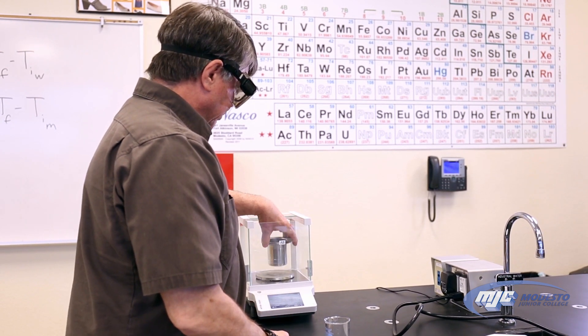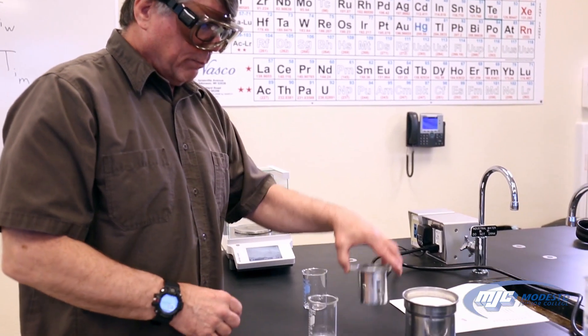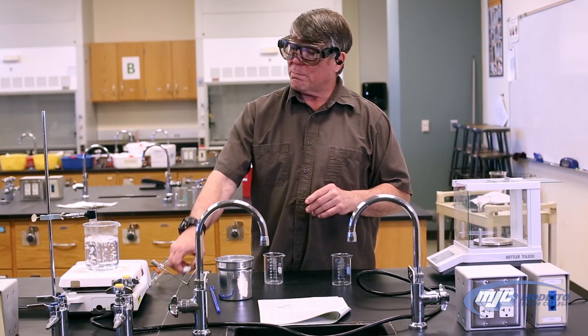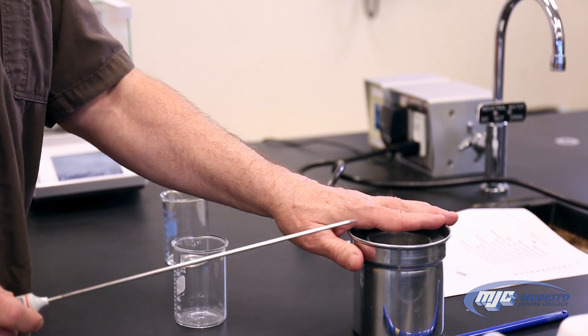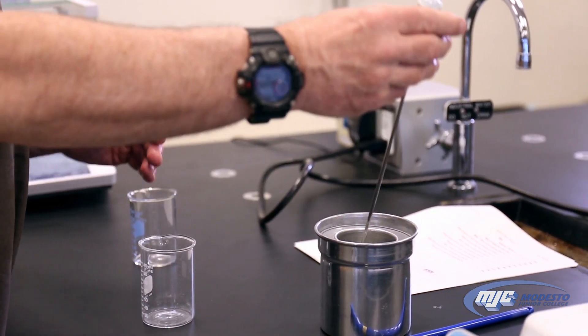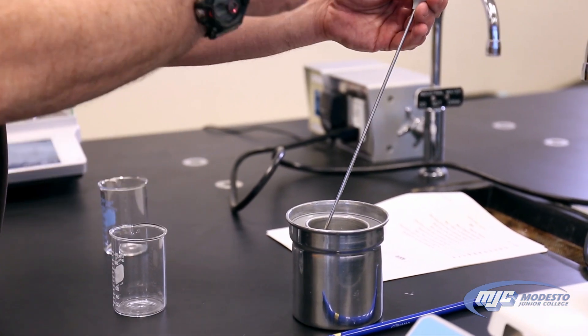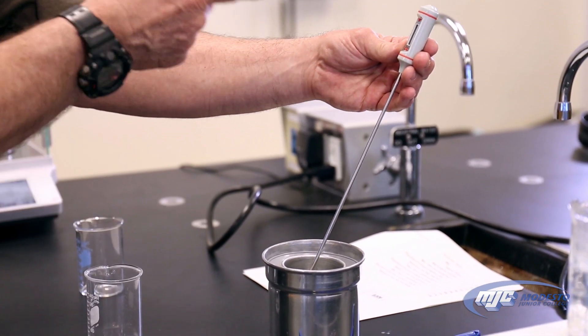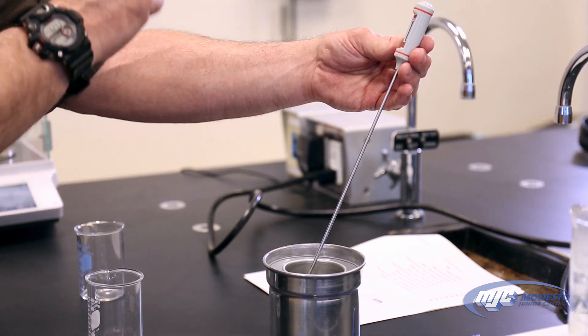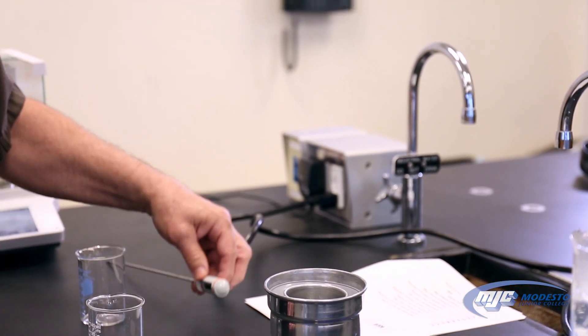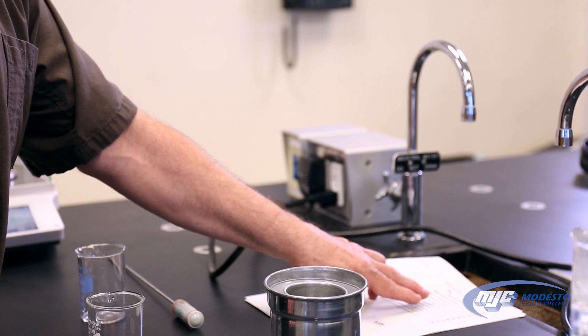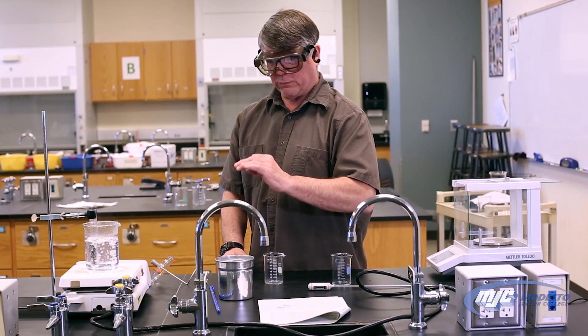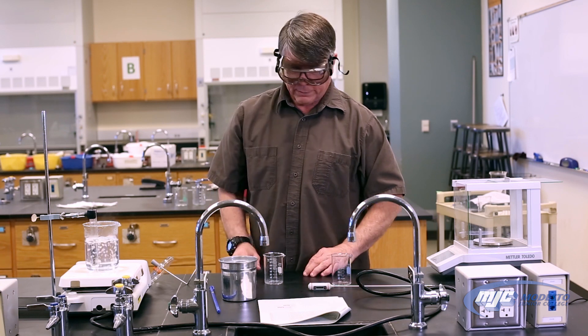So we take it out. Now place it back into the calorimeter. Now we need to know the temperature, the initial temperature of the water. So we take our thermometer, digital thermometer, it's on degrees Celsius. Hold it in there, let it come to equilibrium, read that temperature, one past the decimal degrees Celsius. That's going to be the temperature of the cold water in the calorimeter, A4, B4, C4. Set that there.